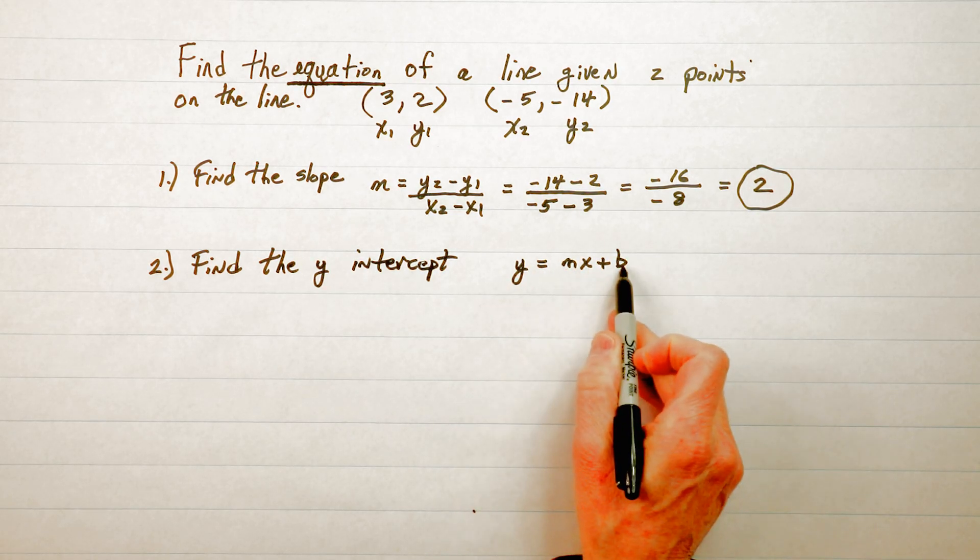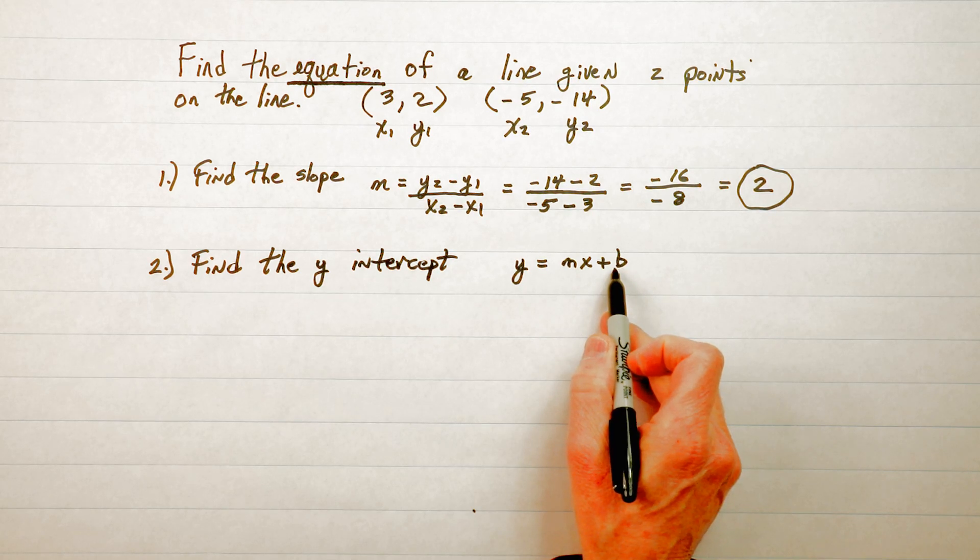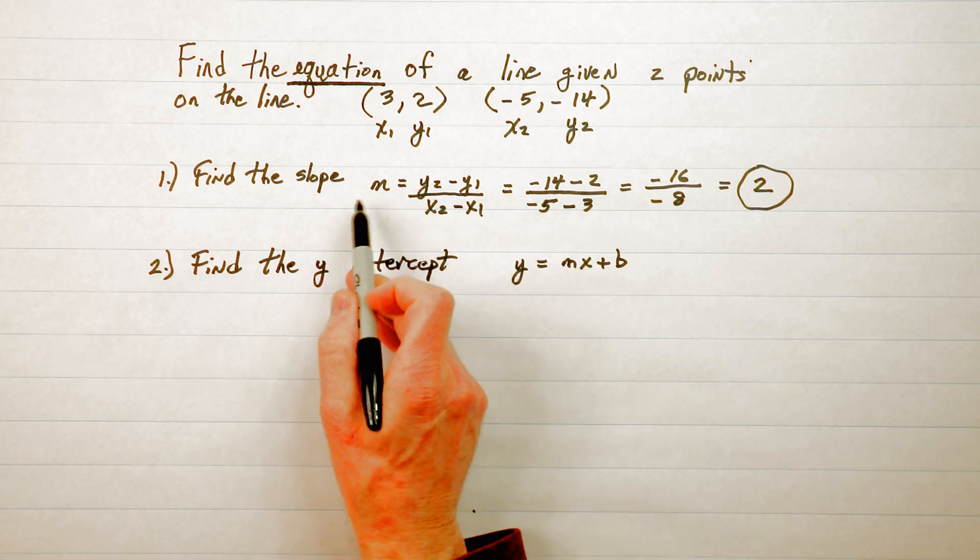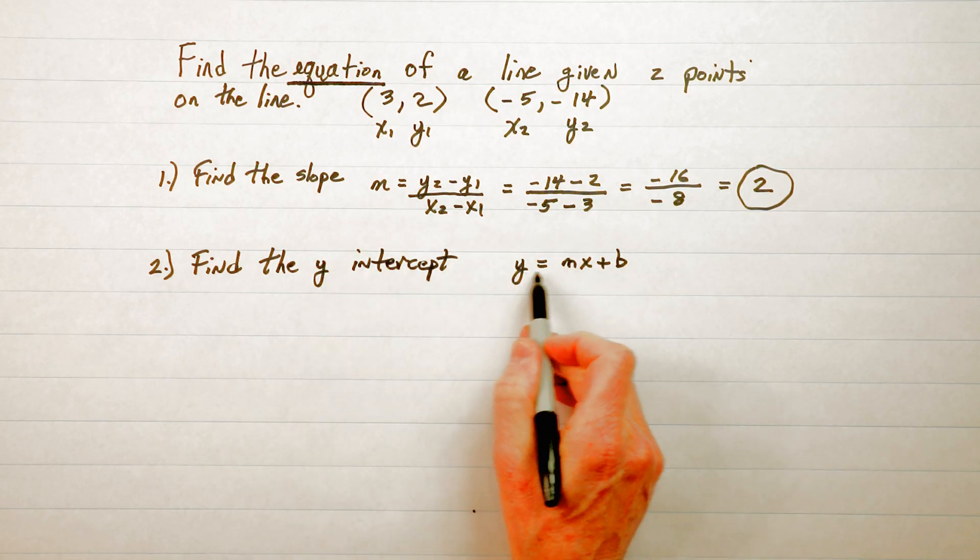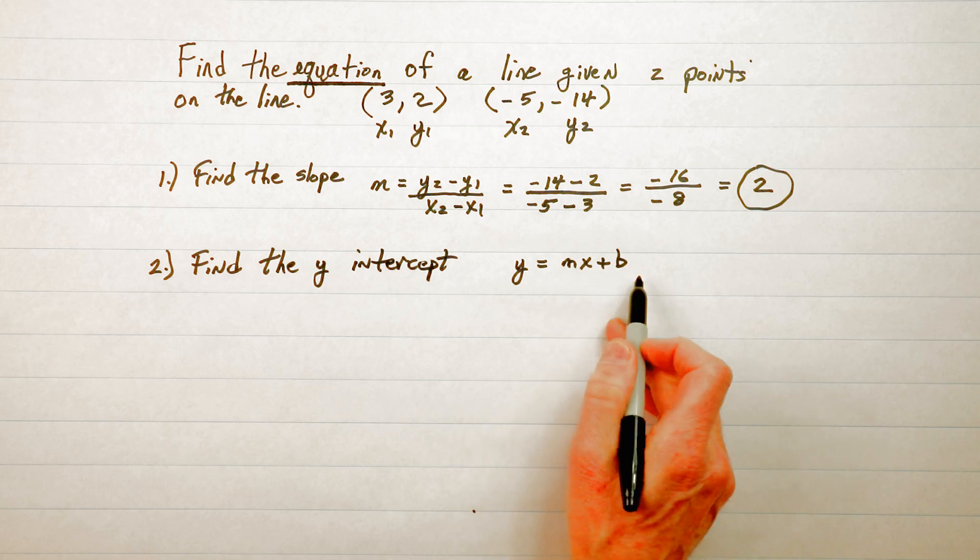M is the slope, b is the y-intercept. And I called m the slope up here because it's part of this equation y equals mx plus b.